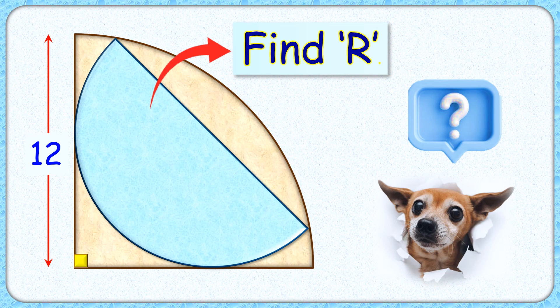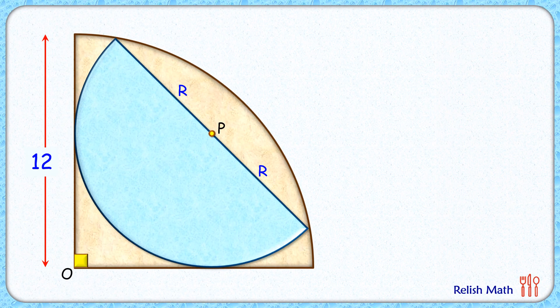Welcome everyone. This interesting question given to us is a semicircle inside a quadrant with radius 12 centimeters. The exciting part is with this limited data we have to find the radius of this semicircle. Let's check this simple and elegant solution.